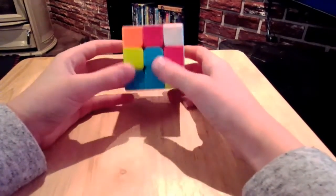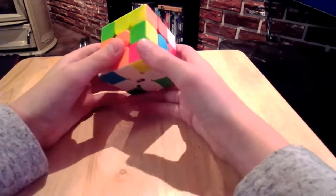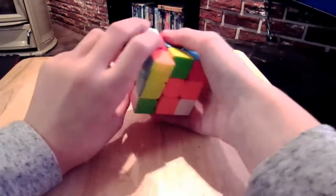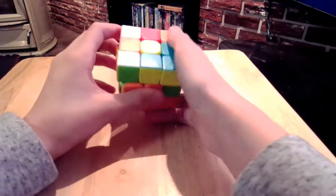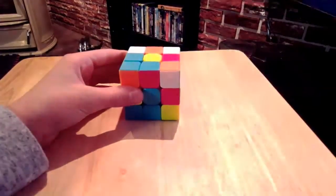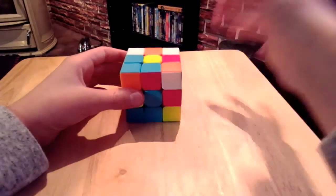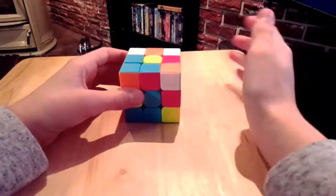Instead of in the Beginner's Method solving these corners, and then solving the edge, and then the top, we are going to be breaking it down into three algorithms. For this one, you will need to know about 16 algorithms. It's not a lot.